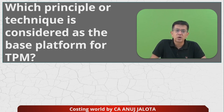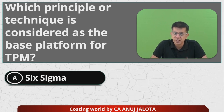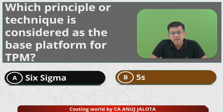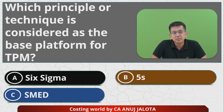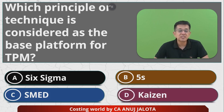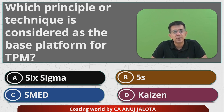If machines are not taken care of, the quality of products will start getting affected. The four options are: first, Six Sigma; second, 5S; third, SMED; and fourth, Kaizen Costing. If you know the answer, pause the video and comment.